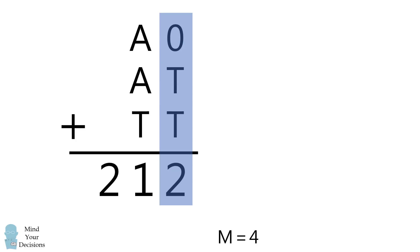Let's focus on T. In the units column, T plus T can either equal 2 or it can equal 12. Consider the first case. If T plus T equals 2, then T is equal to 1.